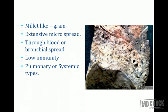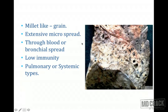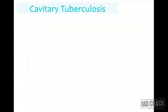Hemoptysis and pleuritic pain can also occur in severe cases due to erosion of vessels in the lung parenchyma. In miliary tuberculosis, the gross specimen shows millet-like grain structures with a cheesy white appearance of the lung parenchyma on cut section. There is extensive microscopic spread that can occur through the blood or along the bronchial tree, indicating low immune status, and the disease can spread systemically to distant organs.